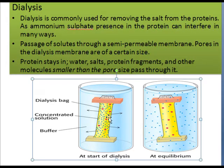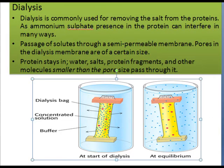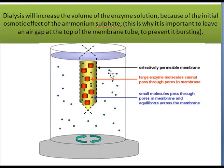This is the diagram of dialysis. The red dots represent our protein of interest, and the blue dots represent the proteins that should be removed. After placing the dialysis bag in buffer, the smaller blue dot proteins move from higher to lower concentration, and after some time an equilibration is established, keeping our protein of interest inside the dialysis bag.